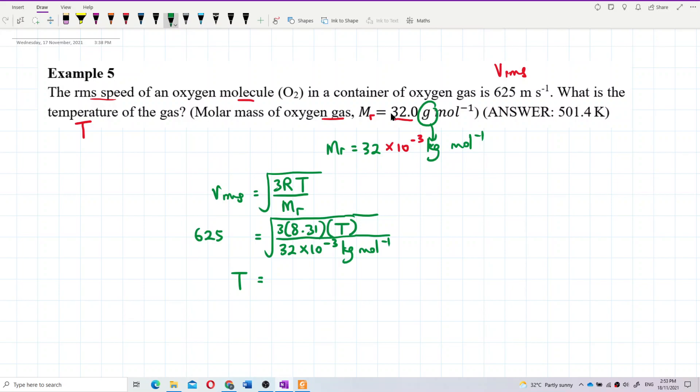The temperature I got is 501.4 kelvin. Is that correct? Yes, 501.4 kelvin. SI unit is kelvin, not degree Celsius. That's it, thank you.